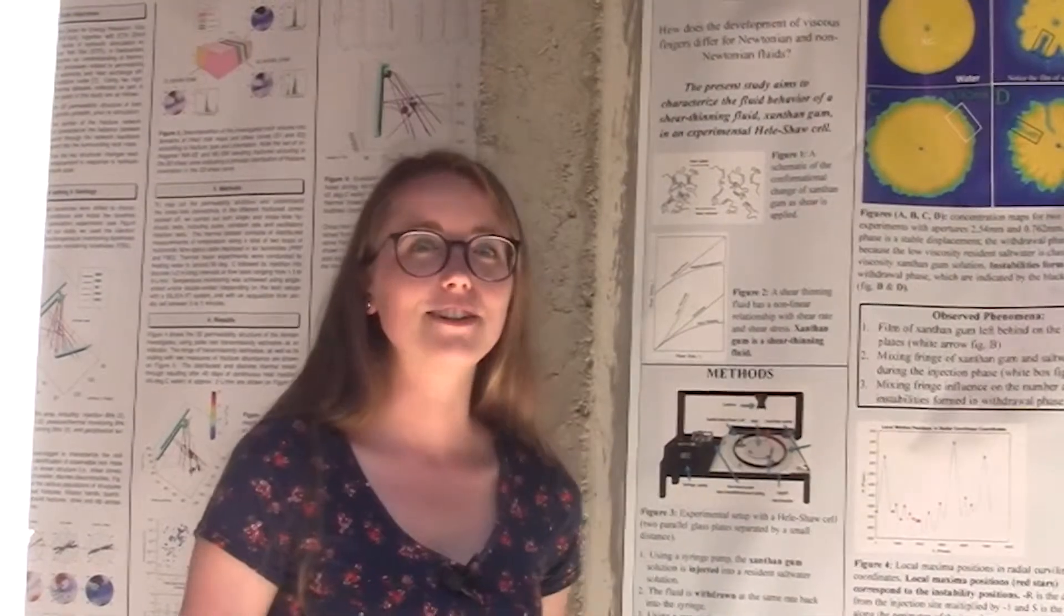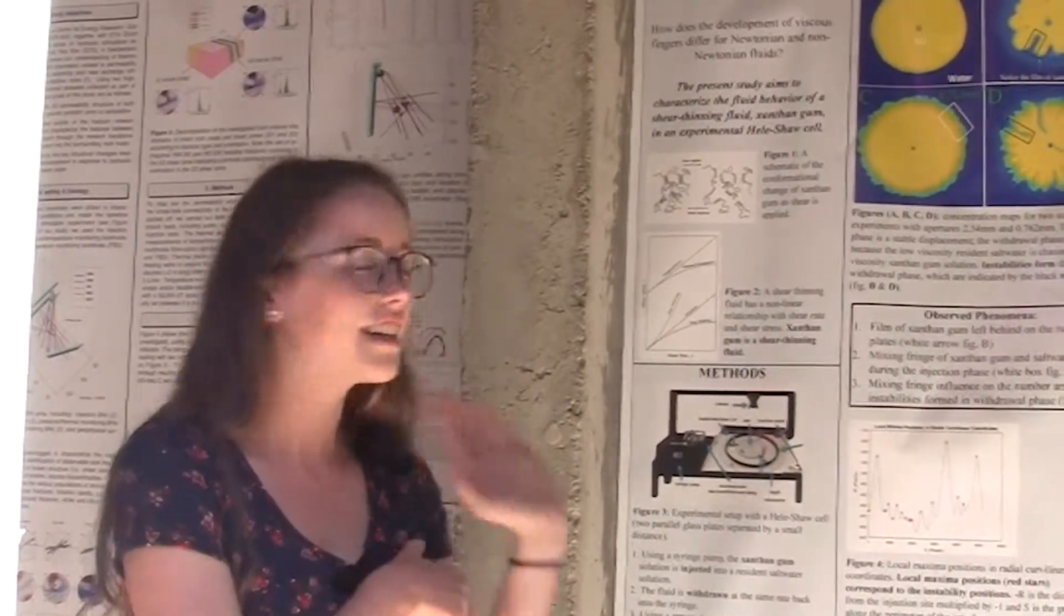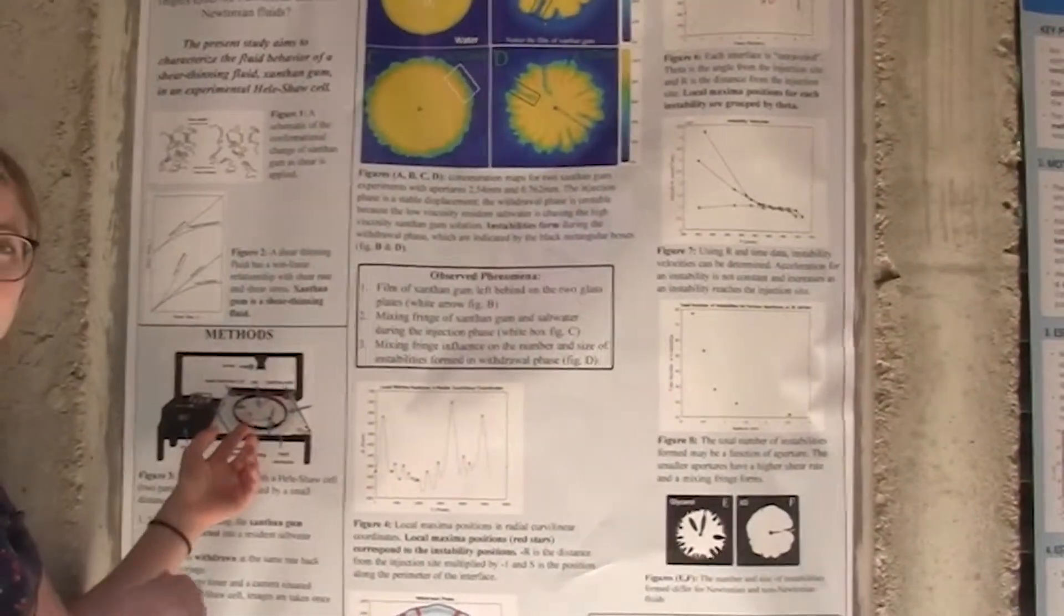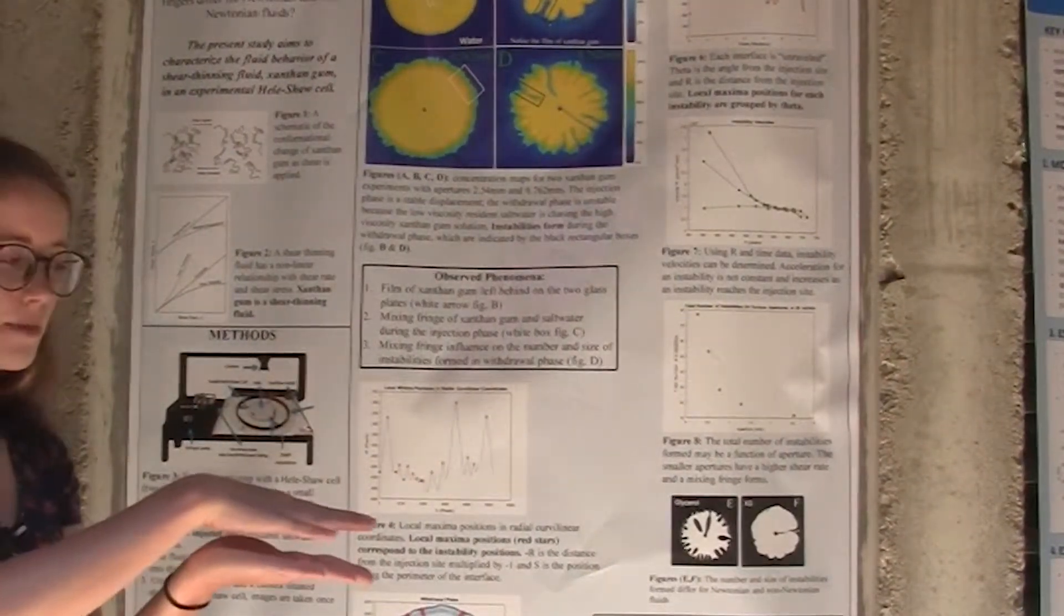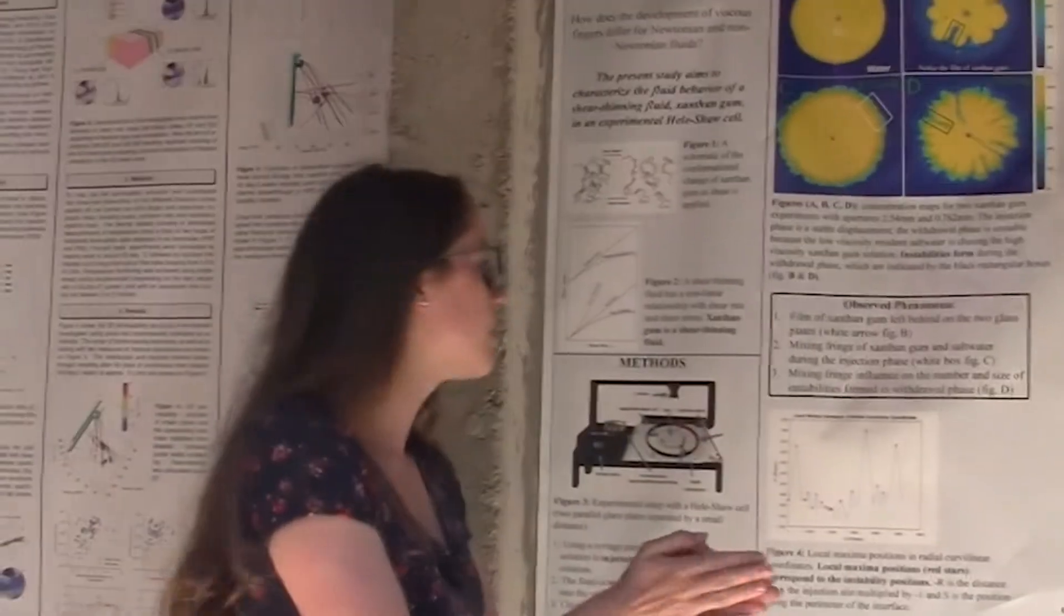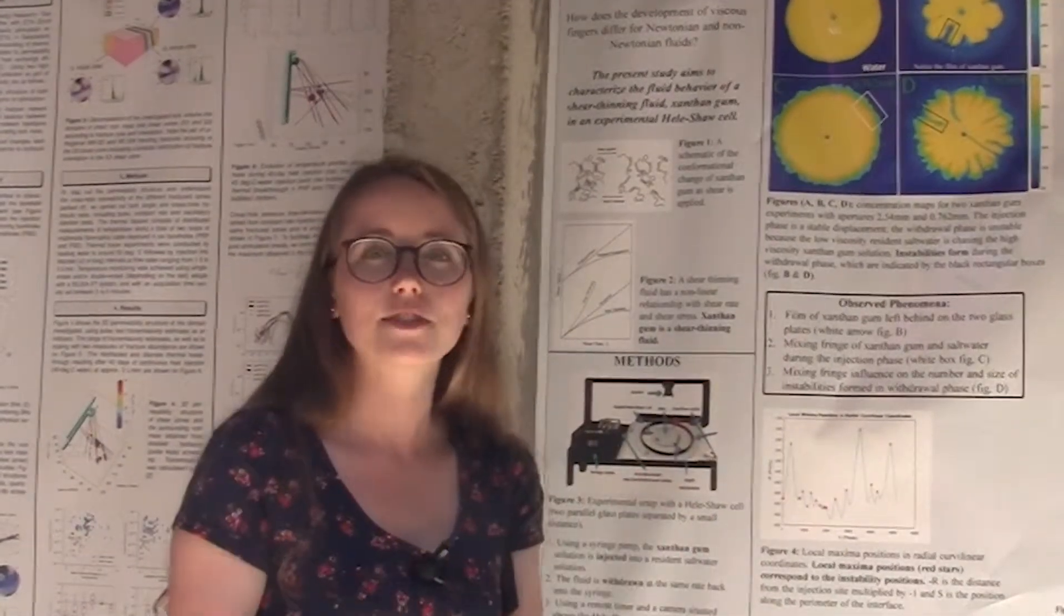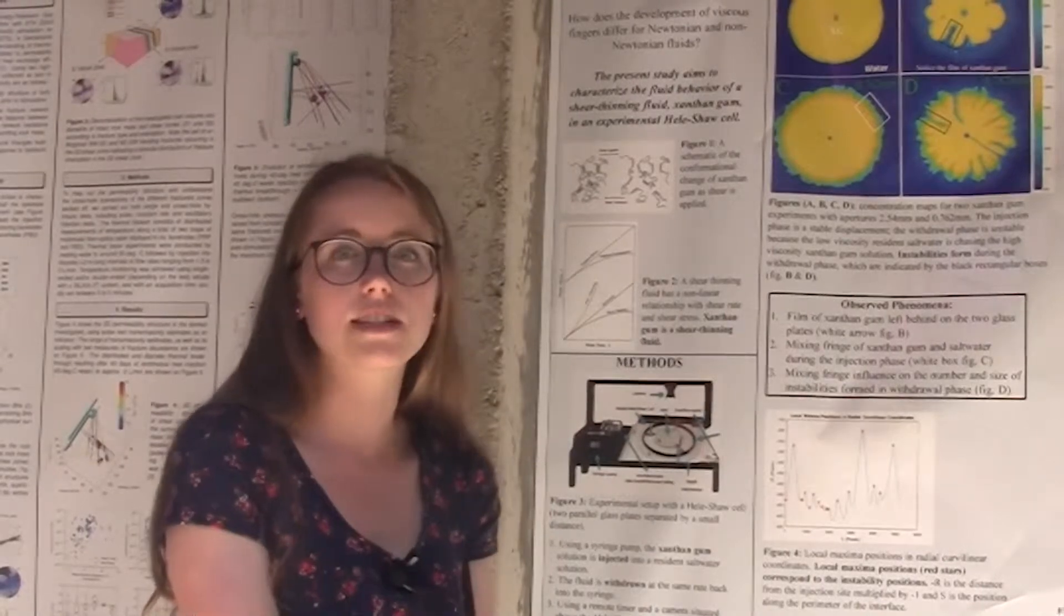I look at non-Newtonian fluid flow in a radial Hele-Shaw cell. A Hele-Shaw cell is basically two parallel glass plates that are separated by a really small distance. That could range, but for instance, it could be like one millimeter, so it's essentially 2D.